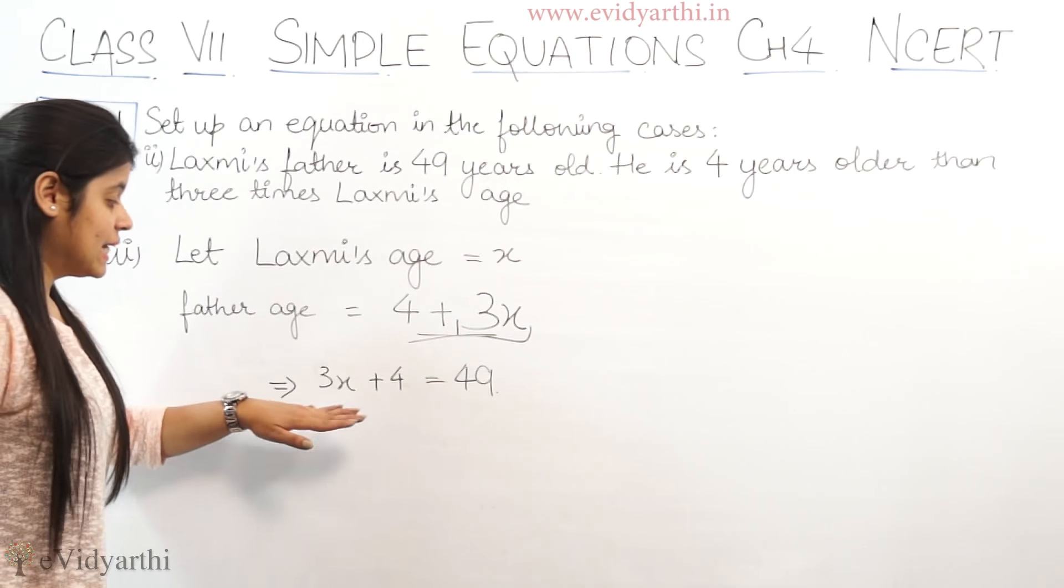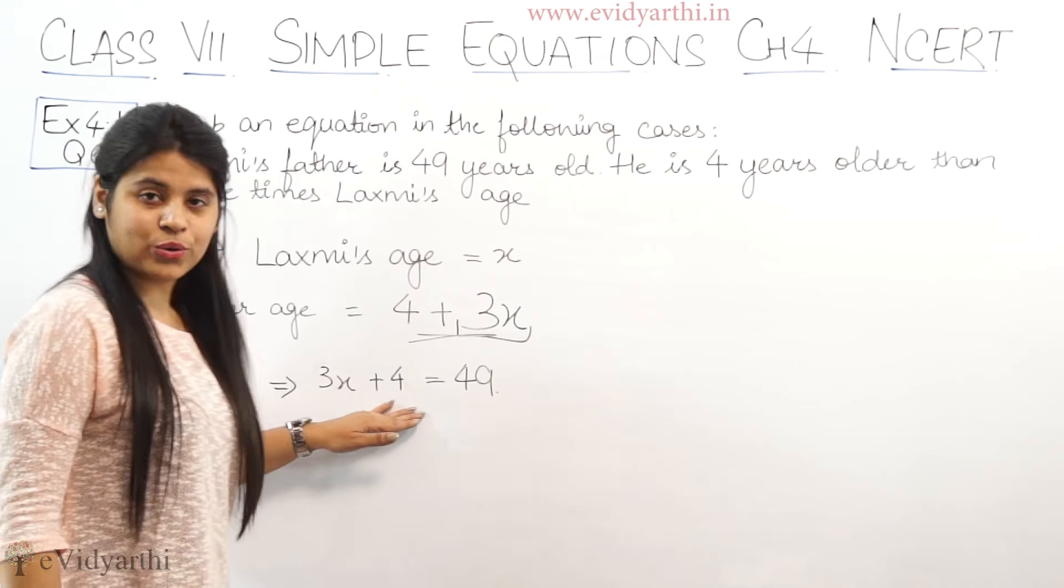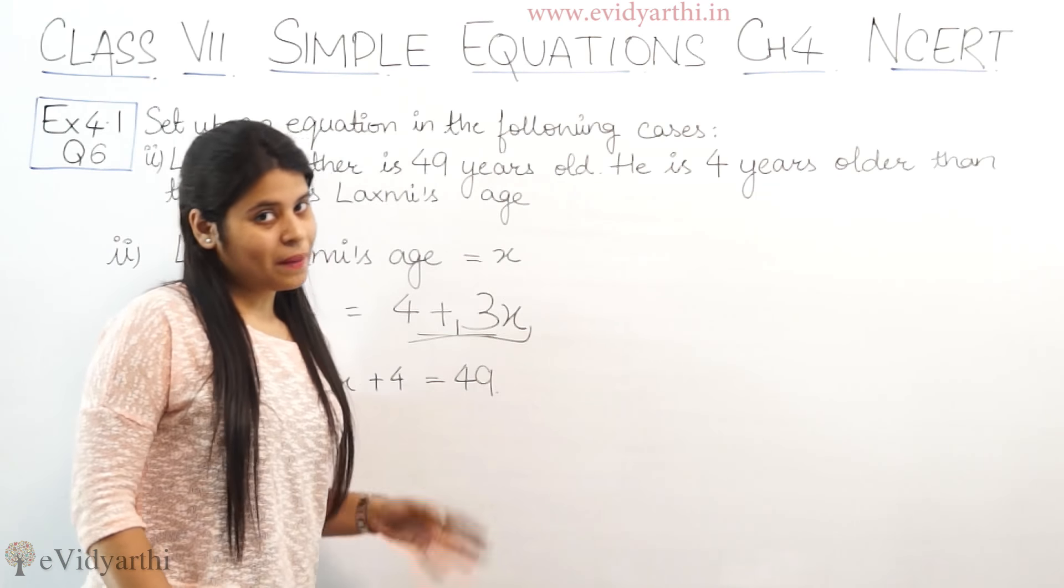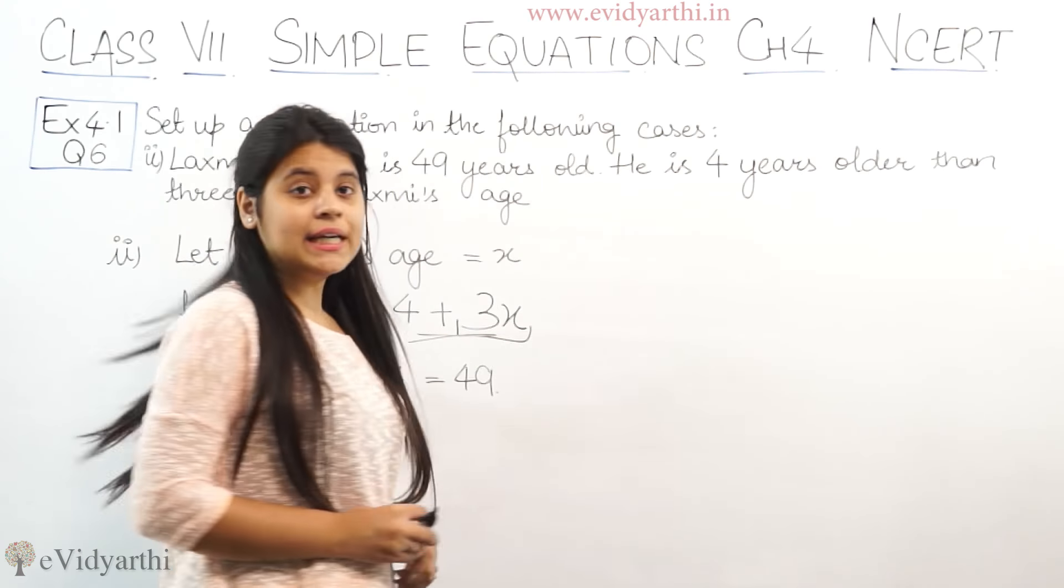So father's age yahan pe 49 given hai. So humaari equation kya ho jayegi? 3x plus 4 equals to 49. Fine. Now let's come to the third part.